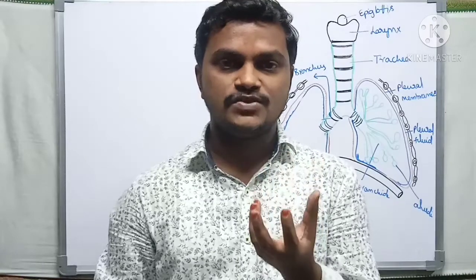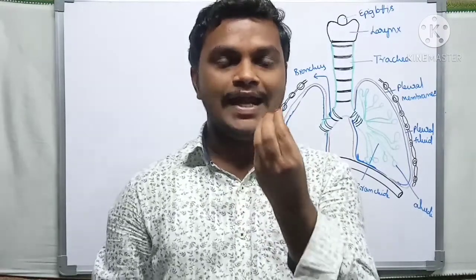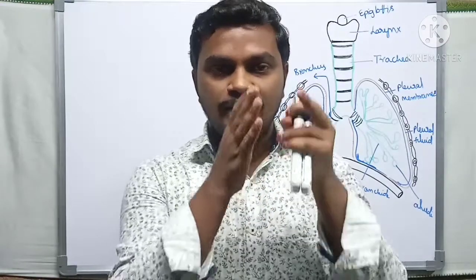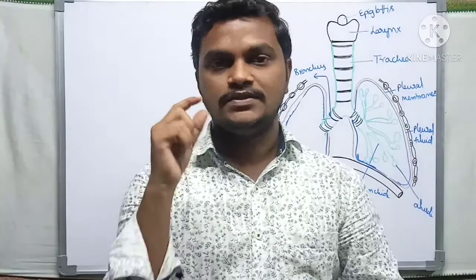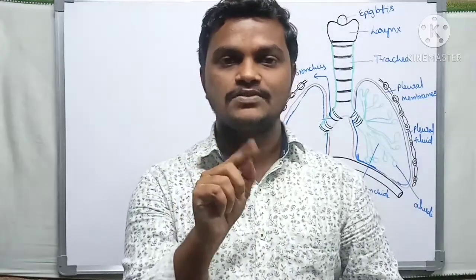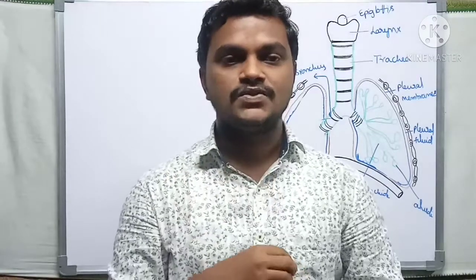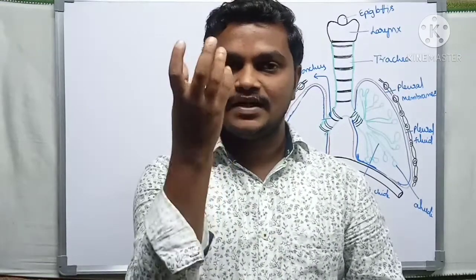In this video, we will explain the next parts of the respiratory system. The pharynx region is the junction for the oro-pharynx, naso-pharynx, and laryngopharynx. Both food and air pass through the pharynx and mix at the larynx region. But after the larynx region, the windpipe (trachea) and food pipe (esophagus) are separated.